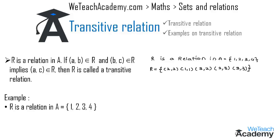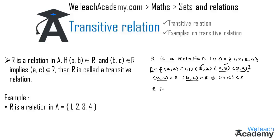For r to be a transitive relation it must satisfy: if (a,b) belongs to r and (b,c) belongs to r, then (a,c) must belong to r. Comparing with ordered pairs (3,2) and (2,3), we get that (3,3) must also belong to r. Since (3,3) is present in r, we conclude r is a transitive relation.